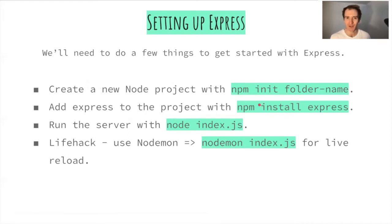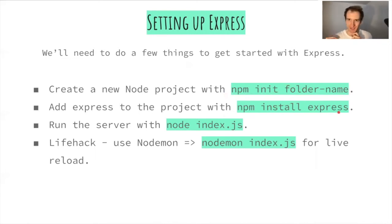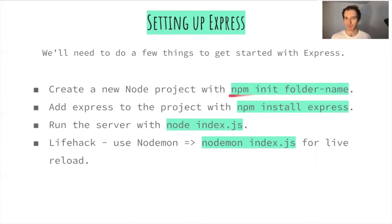To set up Express for the first time, we use the npm command — the Node Package Manager. We use npm init with a folder name to create a new Node project, which comes with a package.json file. Then we use npm install express to download all the required dependencies. By default, we also get a file called index.js where our code will live.